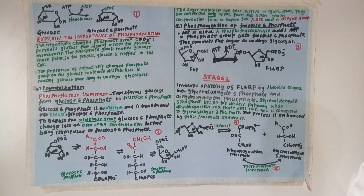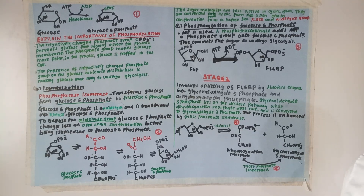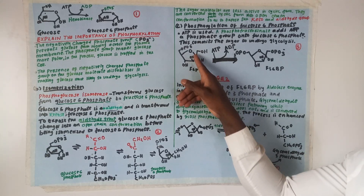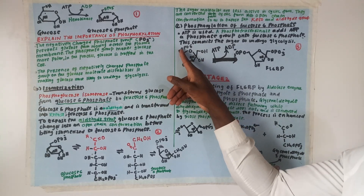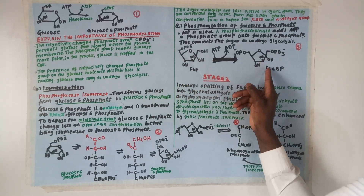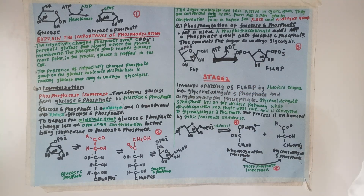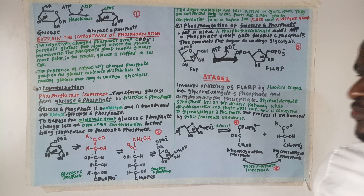Step number three is phosphorylation of fructose-6-phosphate. ATP is used — phosphofructokinase adds a phosphate group onto fructose-6-phosphate so that it becomes fructose-1,6-bisphosphate. In this case, ATP also loses one phosphate group to form ADP. We then go to stage number two.